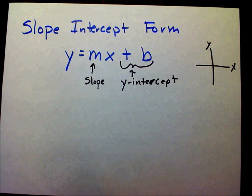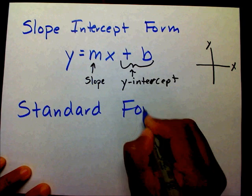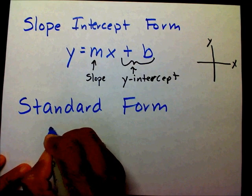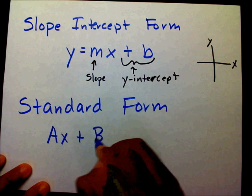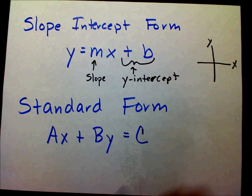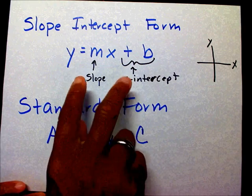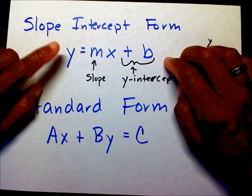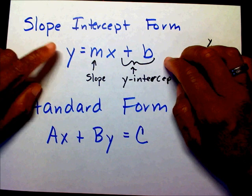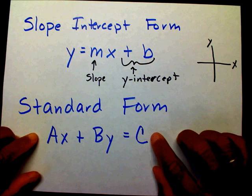Your standard form is ax plus by equals c. In slope intercept form, the y is on the side by itself. So in standard form, the constant is on the side by itself, which is represented by c.